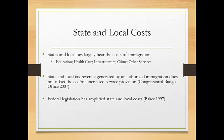Federal legislation has amplified state and local costs — for example, by making it so that undocumented immigrants cannot receive many welfare benefits. But as a nation, we do not allow people to go hungry, go without health care, or go without housing. If the federal government doesn't provide these things and we don't allow people to go without them, that means states and localities must provide them. This is expensive, and many states and localities feel it shouldn't be their responsibility.